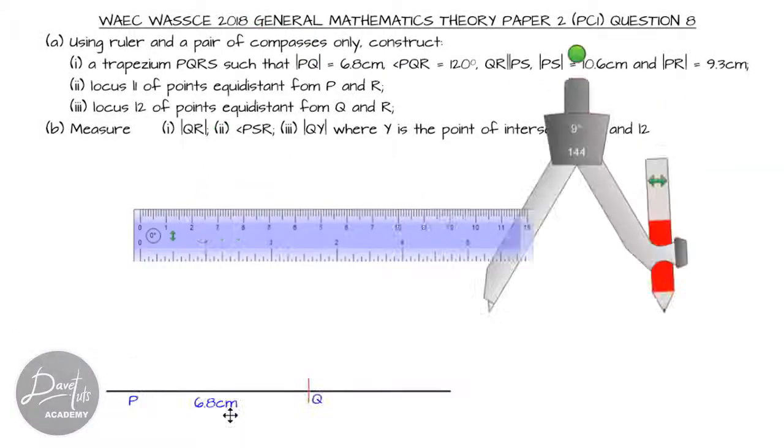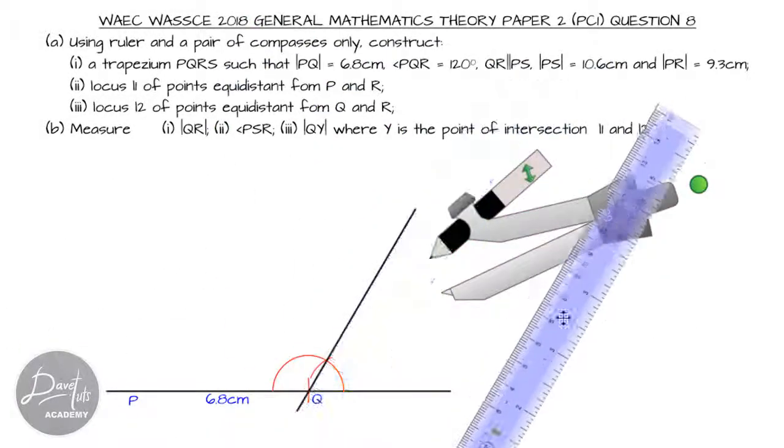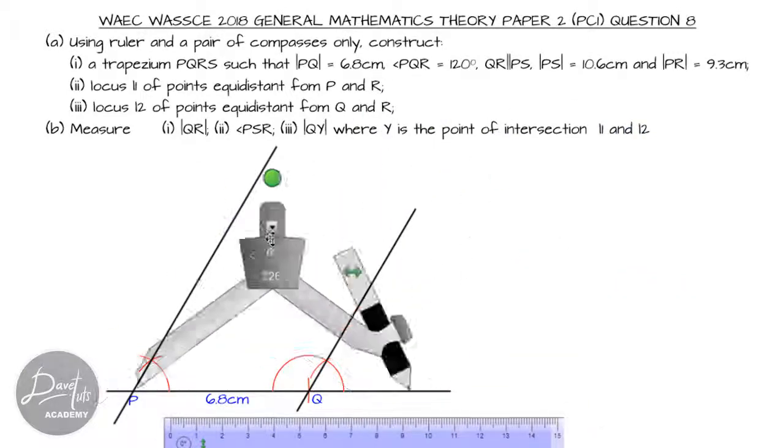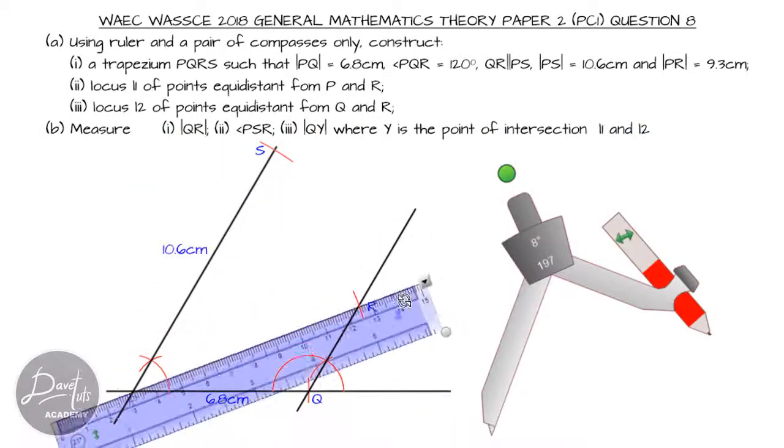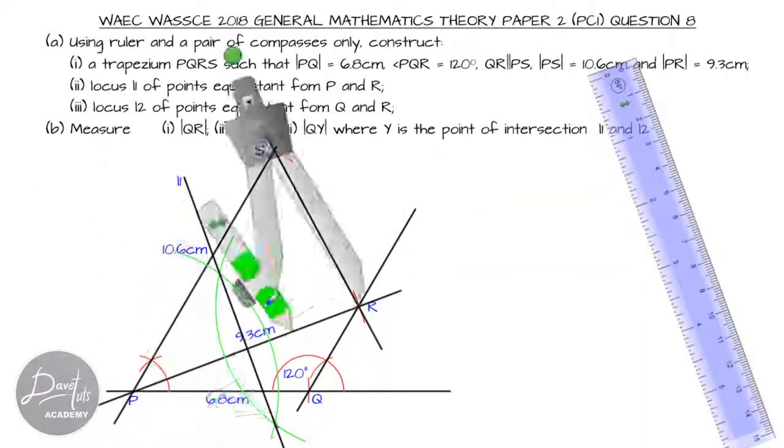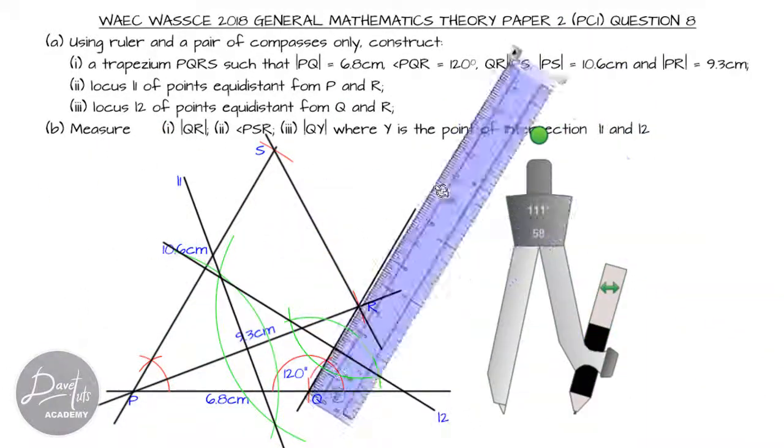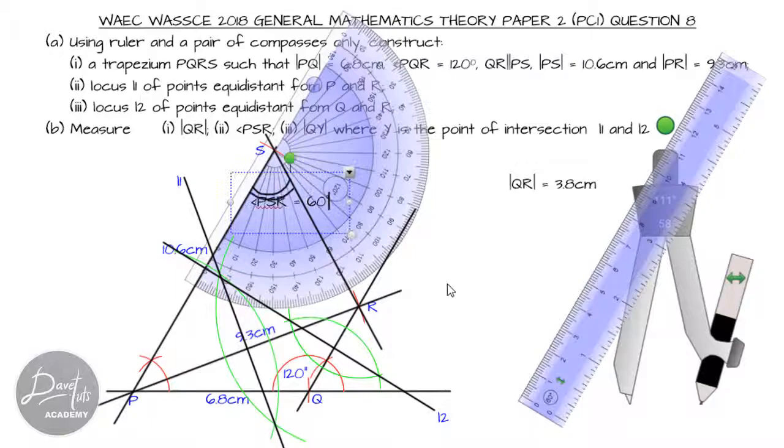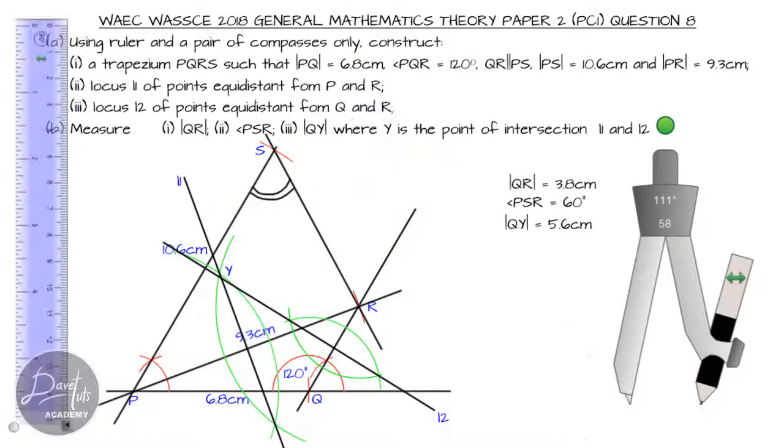What we're going to be doing in this video is constructing a trapezium. We'll draw the two parallel lines, locate the angles where the lines are inclined at one another, and get the locus of points equidistant from two different points.